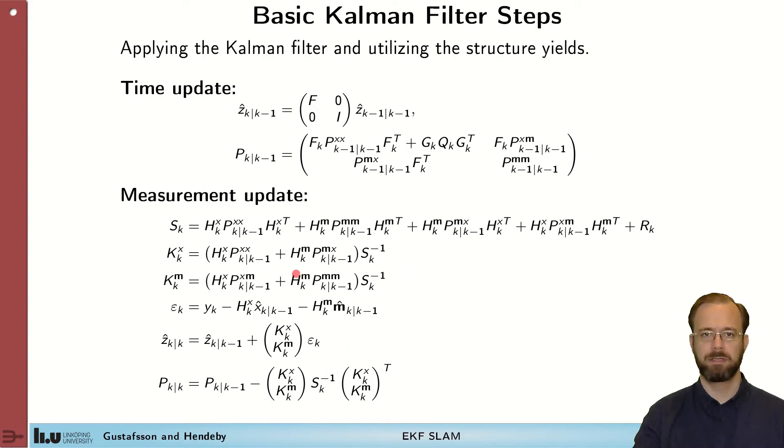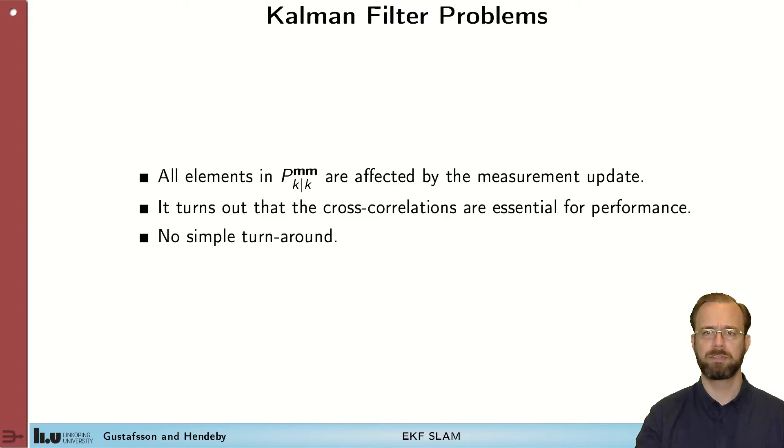The measurement update is exactly the one that we expect from the Kalman filter. However to highlight the structure is here a split into different parts that comes from the division of the state into the pose of the sensor platform and the map. What should be highlighted here is that to update p we touch all the elements in the covariance matrix. And this highlights one of the downsides of the extended Kalman filter SLAM formulation. pmm which is the covariance of the map has all its components updated by the measurement updates and if the map is large say thousands or tens of thousands of objects this becomes computationally complex.